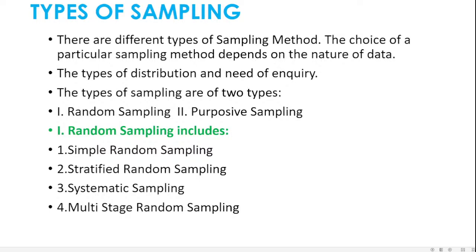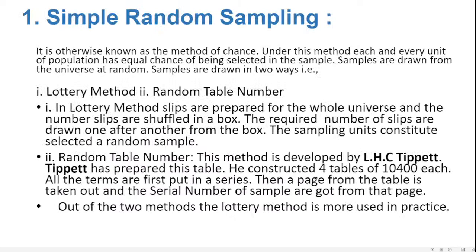Random sampling is again divided into: simple random sampling, stratified random sampling, systematic random sampling, and multi-stage random sampling. Simple random sampling is otherwise known as the method of chance. Under simple random sampling, each and every unit of the population has an equal chance of being selected in the sample.